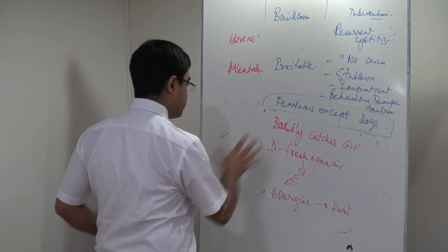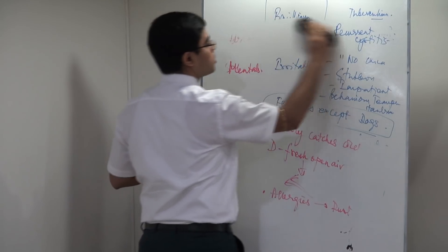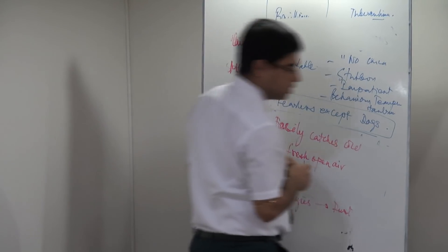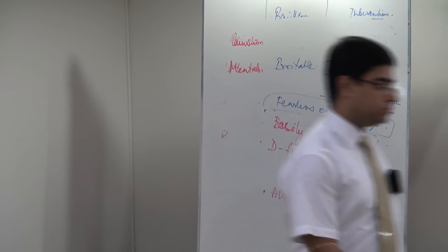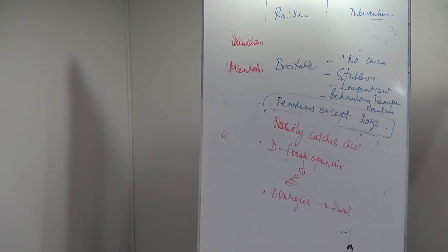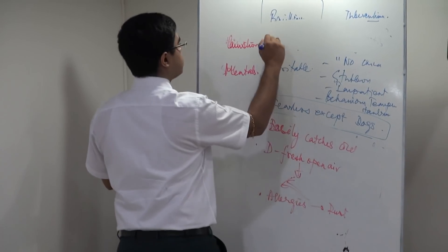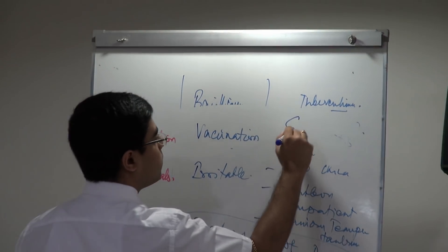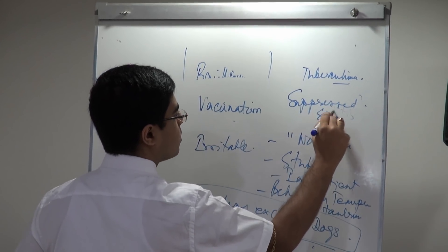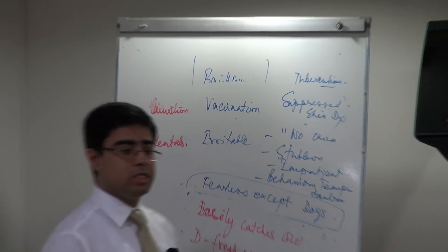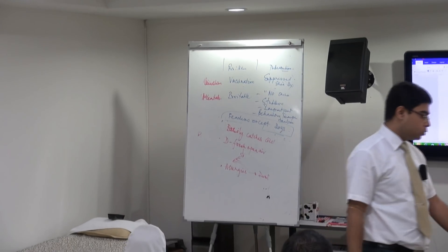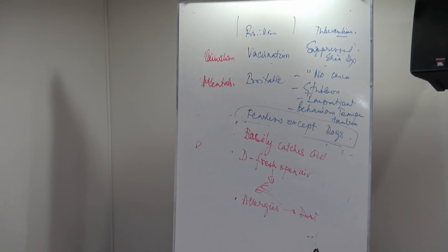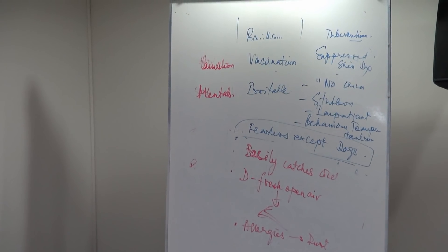One important difference in causation: for Bacillinum, a very important causation is vaccination — respiratory infections developing after vaccination. Burnett's book 'Vaccinosis' mentions Bacillinum as a superb medicine for bad effects of vaccination. Whereas for Tuberculinum, the cause can be suppressed skin disease.